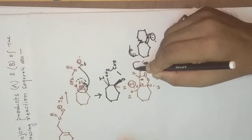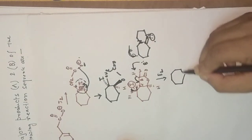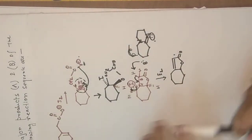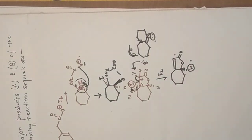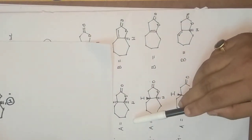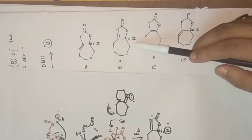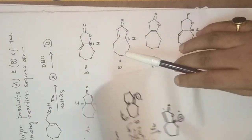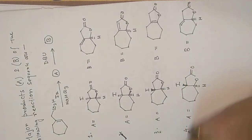The base abstracts the hydrogen and elimination occurs. As a result, we get a product where the hydrogen is below the plane, which matches option two. Where the hydrogen is below the plane, the other group is above the plane, and the product is B — this matches. So only option two is correct; all other options are wrong.